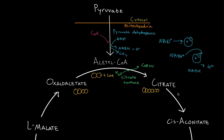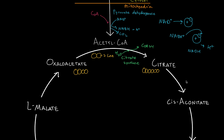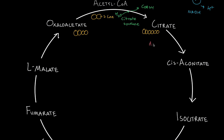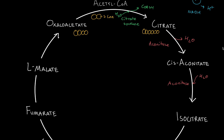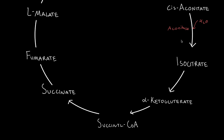Moving from citrate to cis-aconitate, we need the enzyme aconitase, which releases water. Then aconitase is used again with water input to create isocitrate. So basically, this reaction of citrate going to cis-aconitate going to isocitrate is just releasing water and then putting water back in.